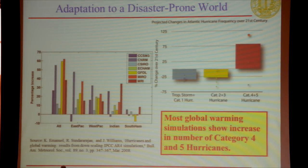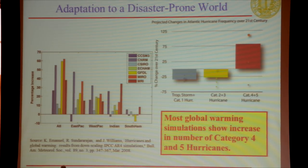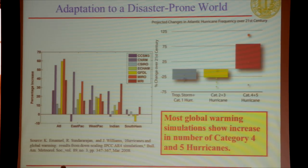Katrina reduced telecom network availability from five nines to about 85% due to power outages. Studies show that the number of category four and five hurricanes are on the rise, so we are living in a disaster-prone world. This work is supported by DTRA, the Defense Threat Reduction Agency, where the focus is mainly military use, but many of these approaches are dual-use for general disasters as well.